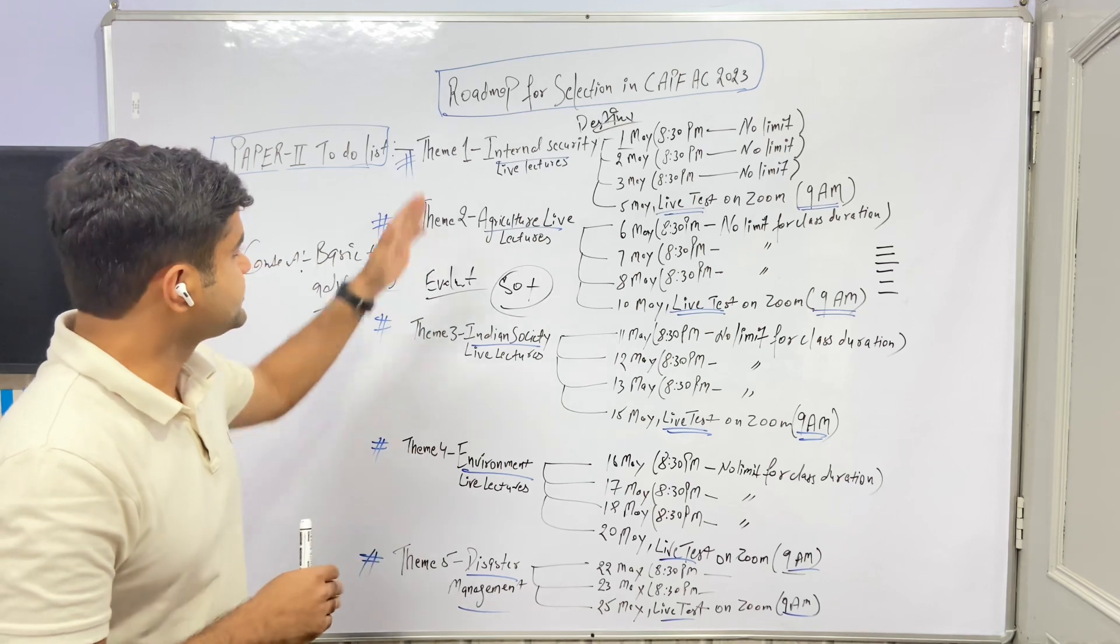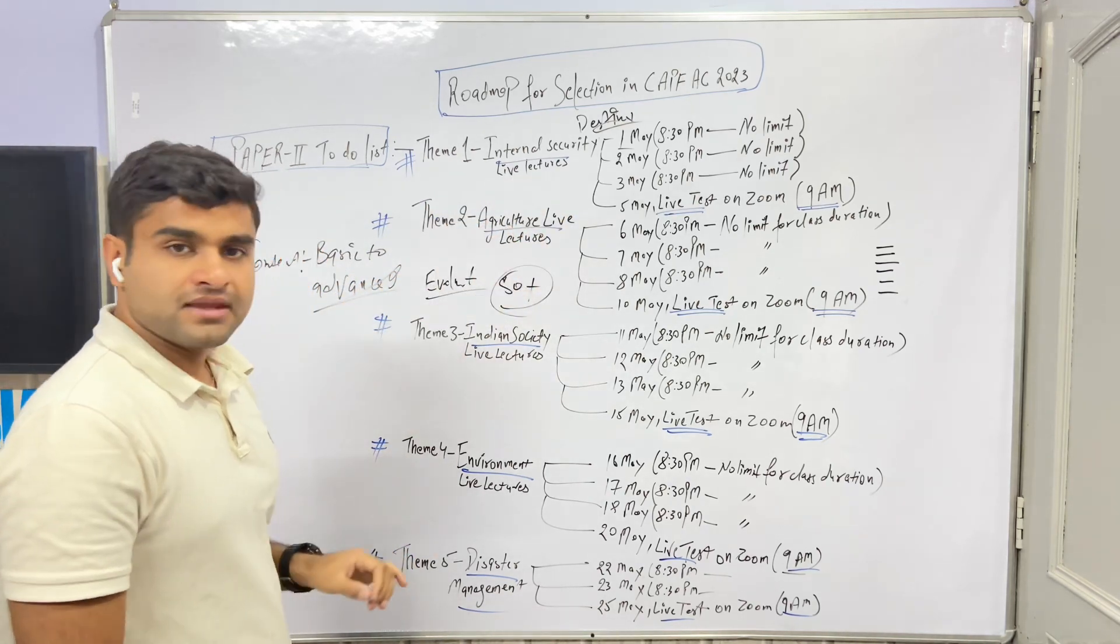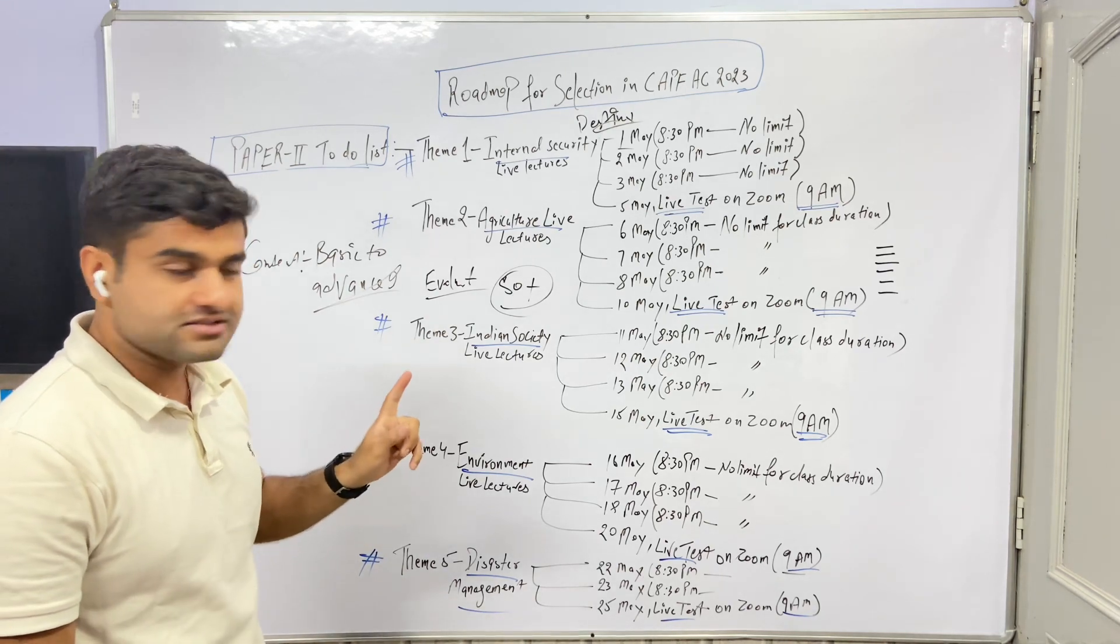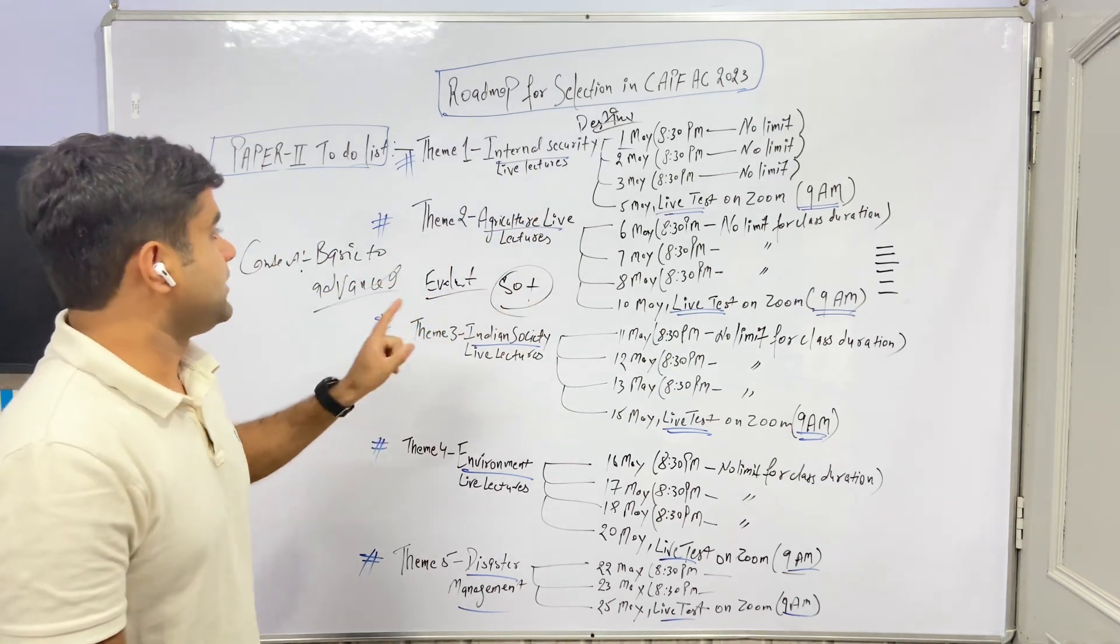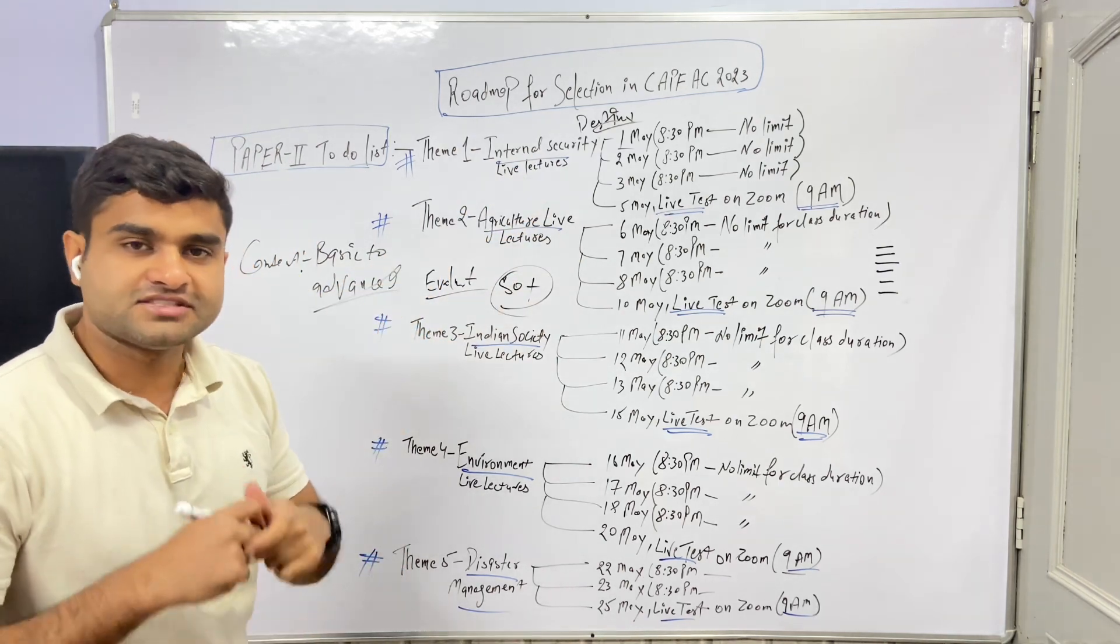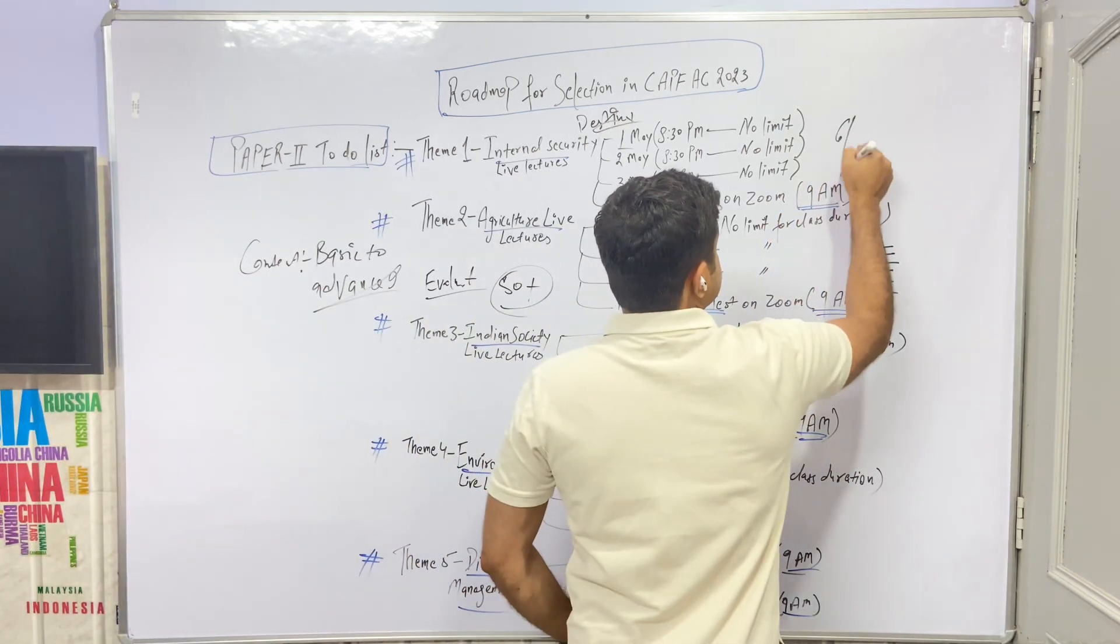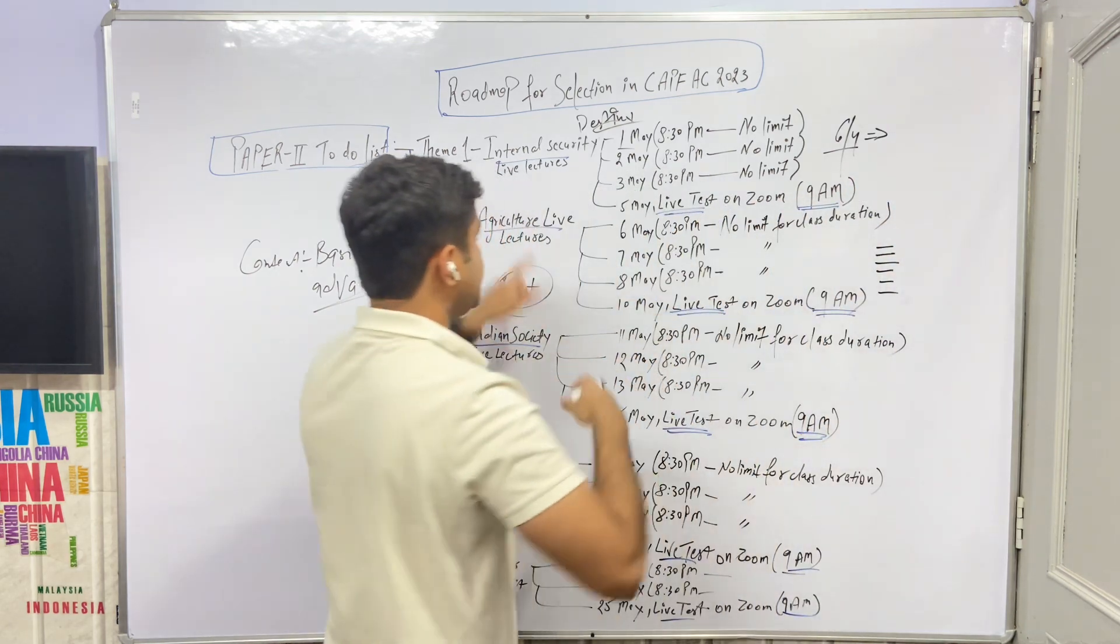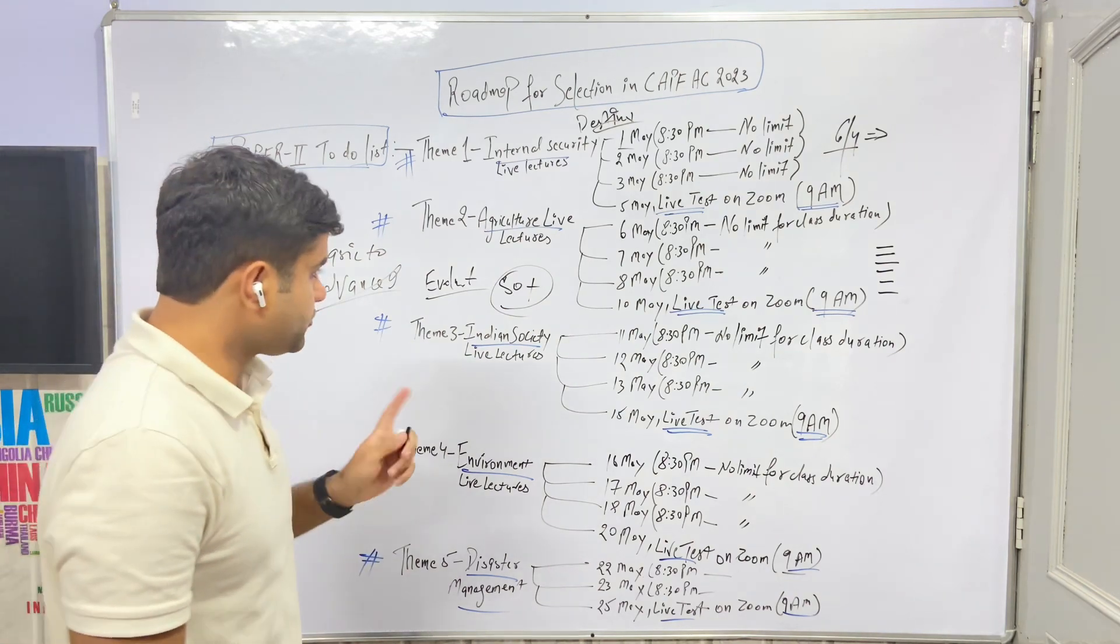Then we do agriculture. Agriculture gets 1-2 questions, internal security at least one question. So we cover 6 topics, you will prepare 4. When I tell you internal security and agriculture, you prepare 2 topics per theme.